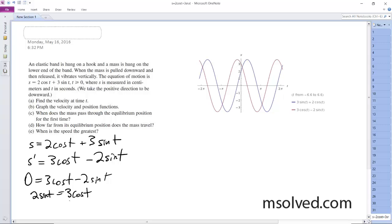What I'm going to do is divide through by, so I'll manipulate this. And what I end up getting here is 2 sine t over 3 cosine t is equal to 1.